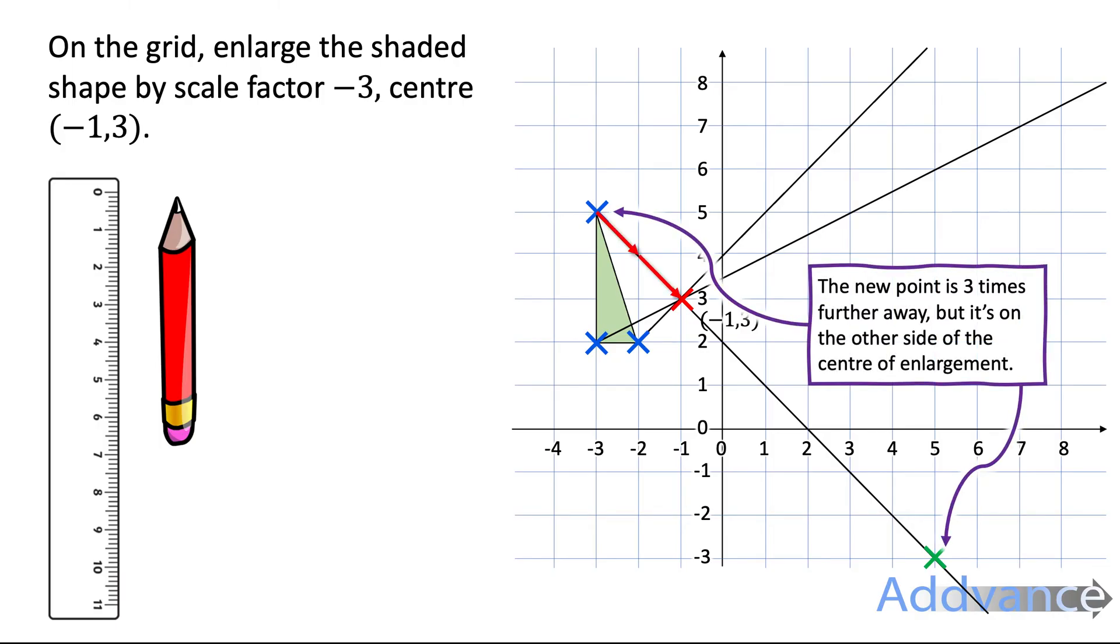And now we're going to move the corners of the shape three times further away from the centre but in the opposite direction. So the new point is three times further away but it's on the other side of the centre of enlargement. Over here we've got two squares between the corner and the centre and over here we have six squares between the centre of enlargement and the corner.